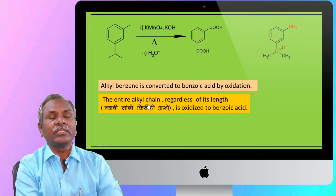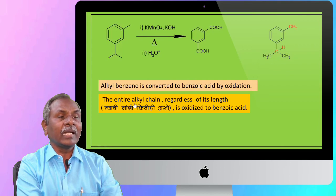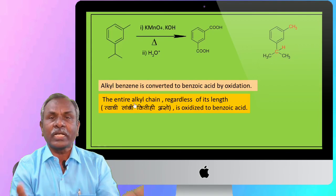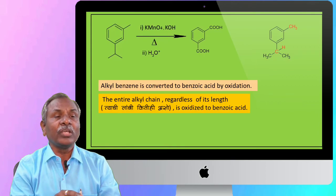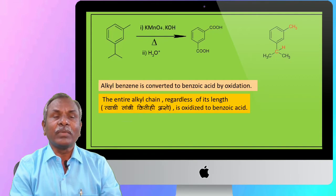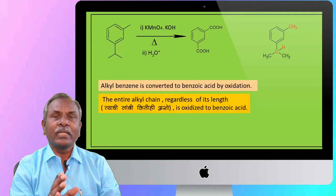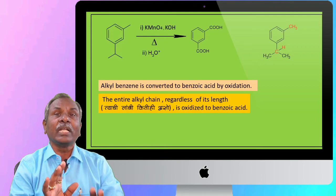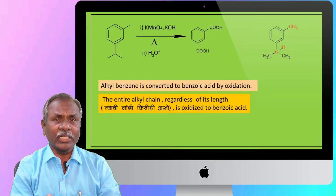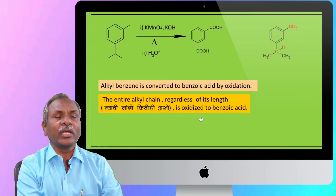The entire alkyl chain which is outside the benzene ring — regardless or irrespective of its length, that is immaterial — is oxidized to benzoic acid. What is important is whether a benzylic hydrogen is attached to the benzylic carbon or not. That is the key condition.